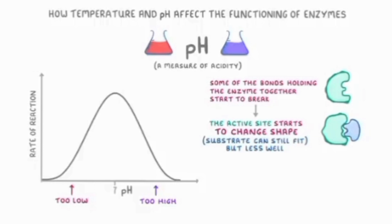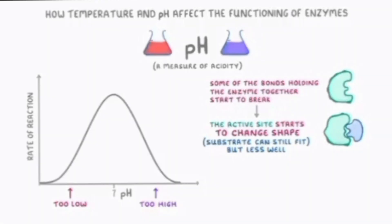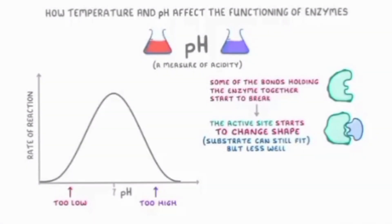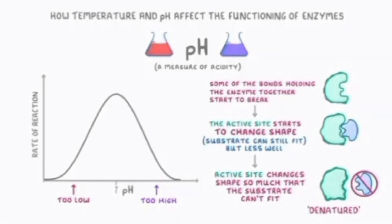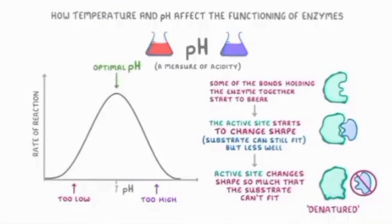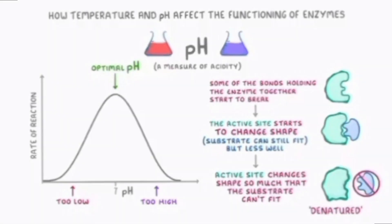The rate of reaction does not completely stop, but gradually as pH increases or decreases, active site changes also increase, and finally the substrate cannot fit. At this point, we say that the enzyme has been denatured. The pH where the enzyme works best is the optimum pH. At this point, the rate of reaction is highest, just like in the case of optimum temperature.